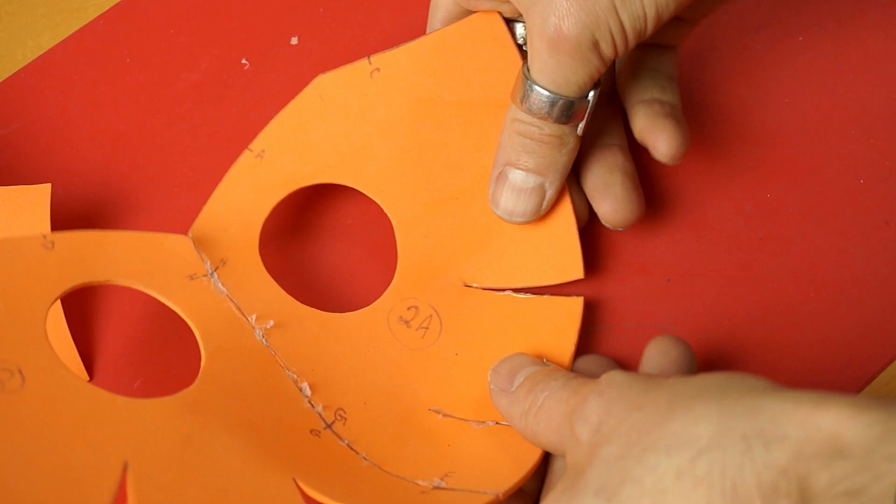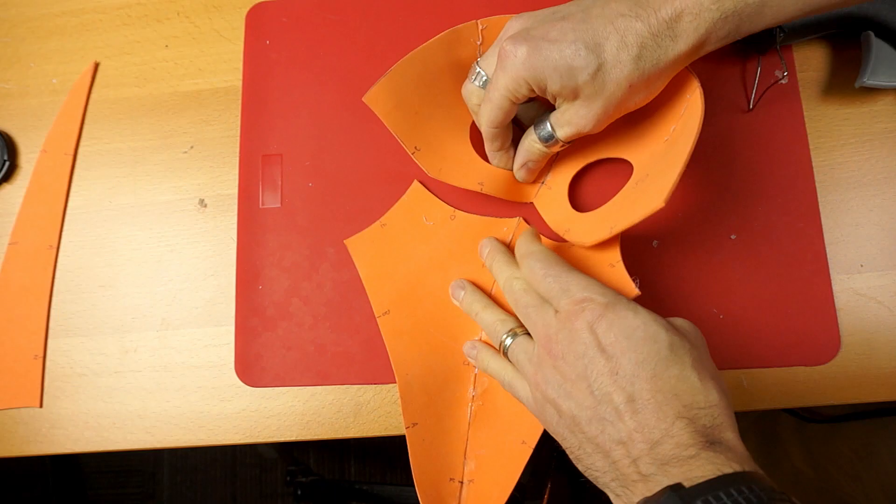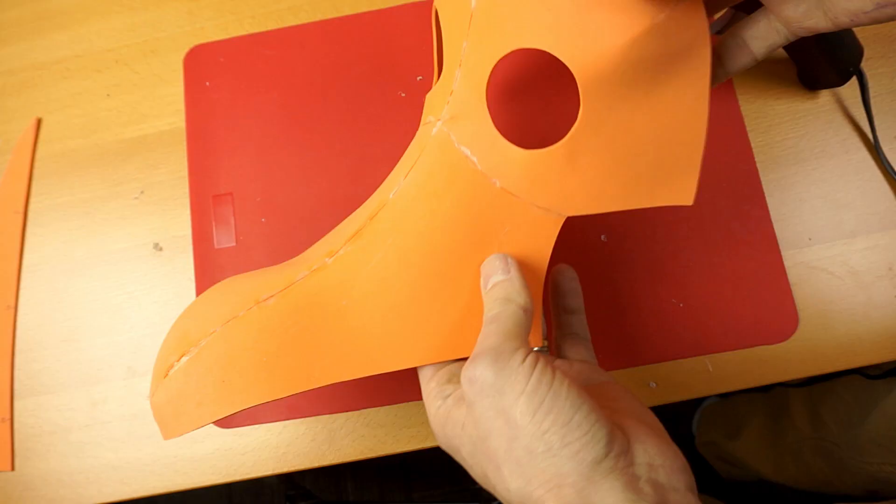And now we'll glue the centers of the two piece twos together, also gluing the V-shaped cutouts along the edge. Now let's attach the beaky looking part to the part with the eyes.